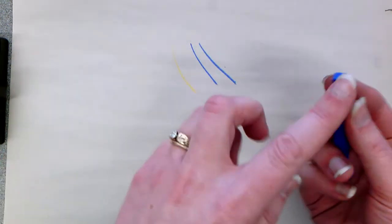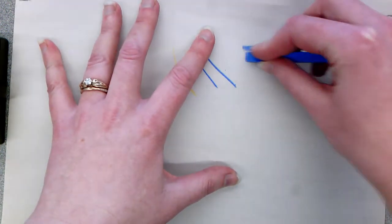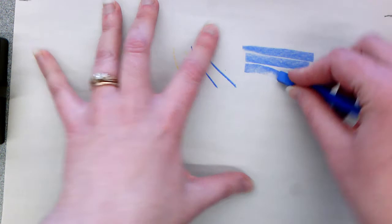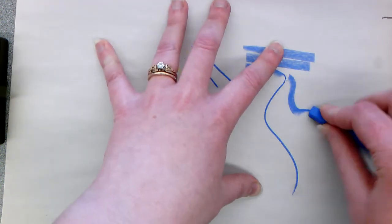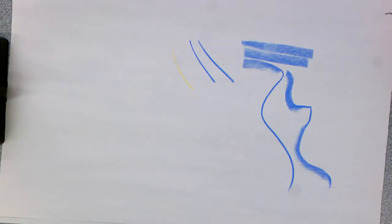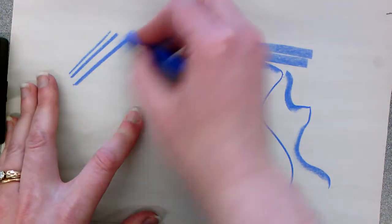You can use the square edge here to get thicker lines. You can change that line quality by tilting as you go. You can do some cross hatching.